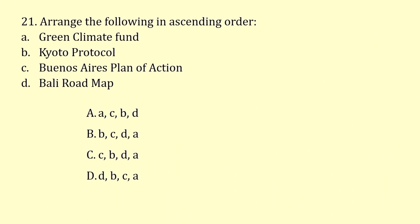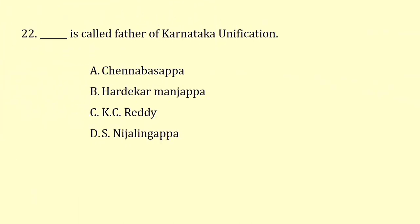Arrange the following in ascending order. Green Climate Fund was initiated in 2010, Kyoto Protocol in 2005, Bonos Aries Plan of Action in 1978, and Bali Roadmap in 2007. The correct answer is option C.